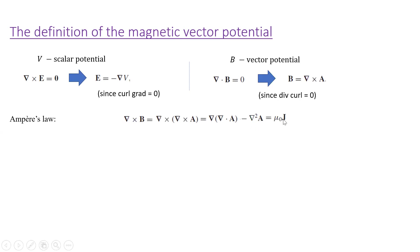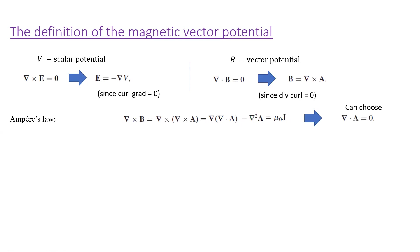In principle, given J and our current densities, we could use this to find an A that satisfies that. But A is appearing in two different places, making it an extremely difficult equation to solve. It turns out that we can always choose our vector potential A so that the divergence of A is zero. That makes this term go away and we're left with just the Laplacian term, leaving a simpler equation.